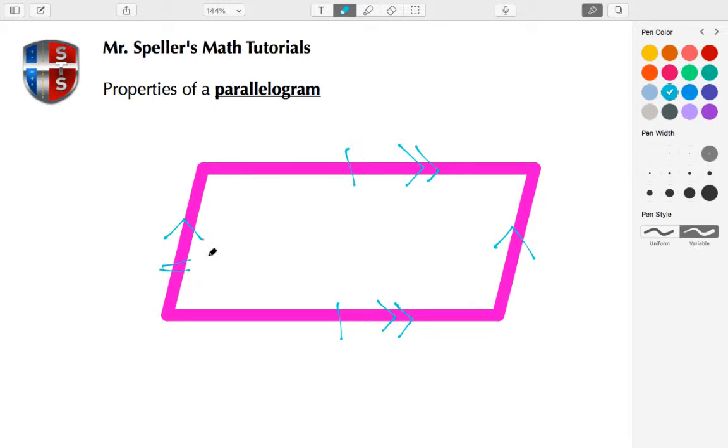We know that opposite angles are congruent, so this angle here is congruent to this angle. Matter of fact, let's label this parallelogram. Let's call this A, B, C, and D. So angle D is congruent to angle B. We know that angle A is also congruent to angle C.